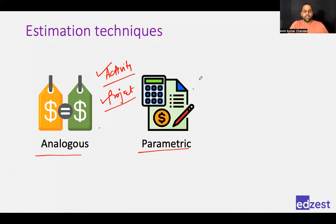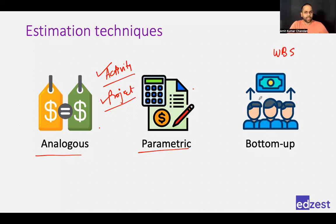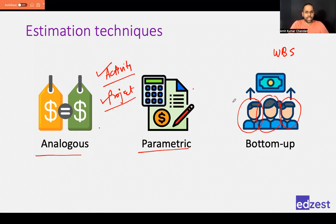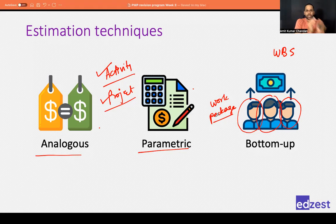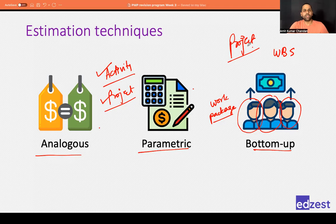The third type of estimation is bottom-up, where you go into the detail. You look at your WBS, go to the work package level, and individually estimate for every resource — not just people but also computers, laptops, suppliers, and every activity. When you estimate at the work package level, you add all those estimates together — work package one, two, three, four, five — and you get the complete project estimate.